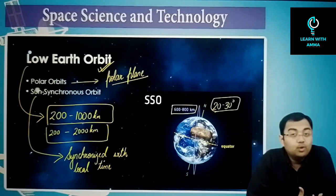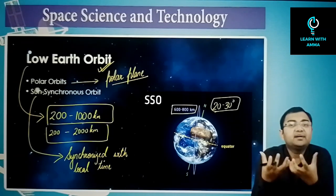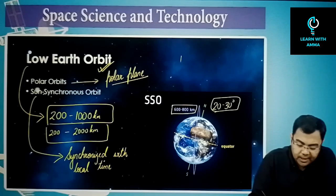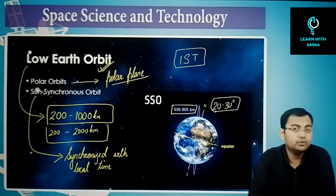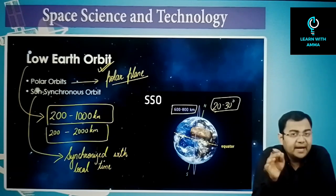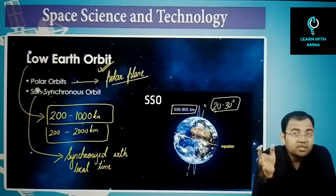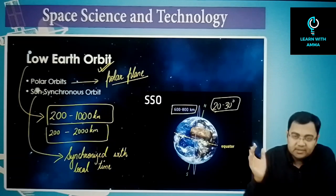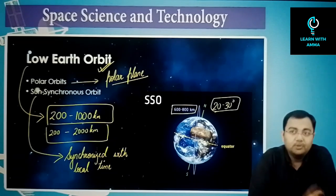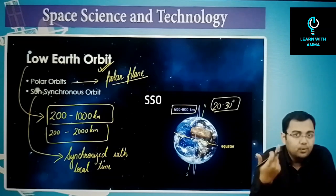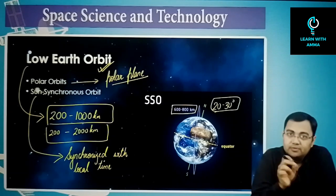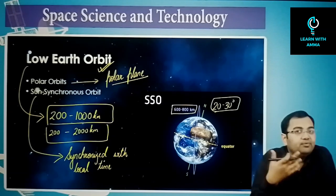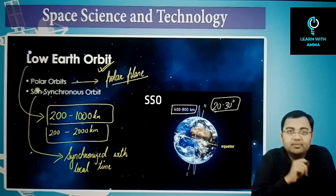Local solar time differs from standard time. In India, for example, when the sun rises in Arunachal Pradesh it is still night in Gujarat, because the sun moves east to west due to Earth's west-to-east rotation. So local solar time is different at each place.